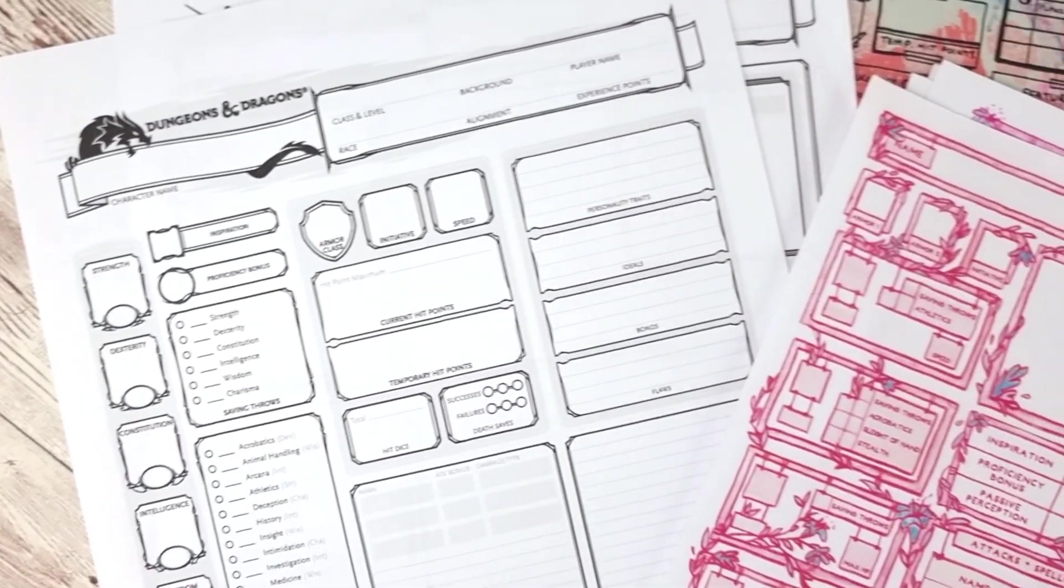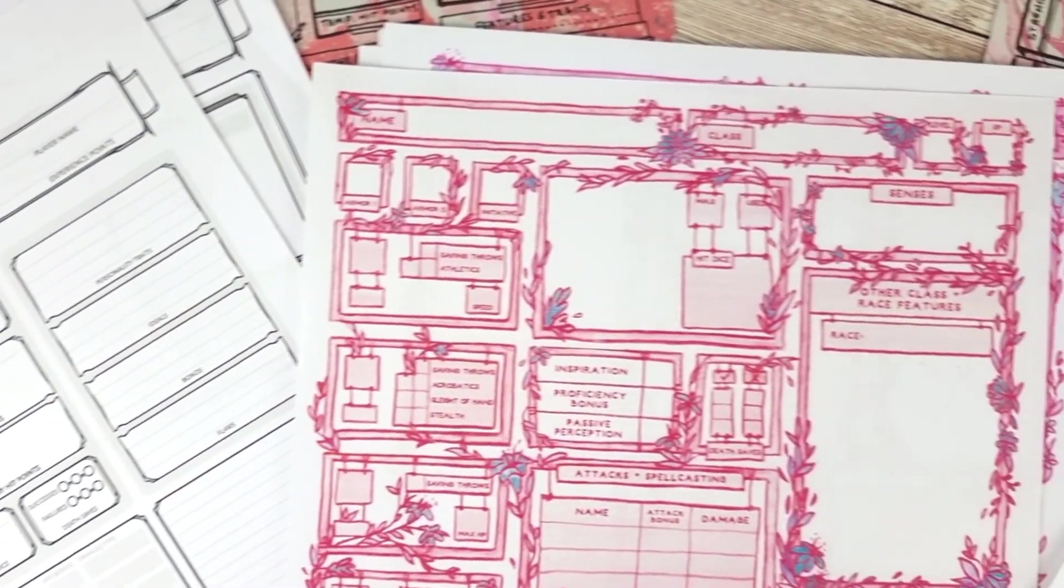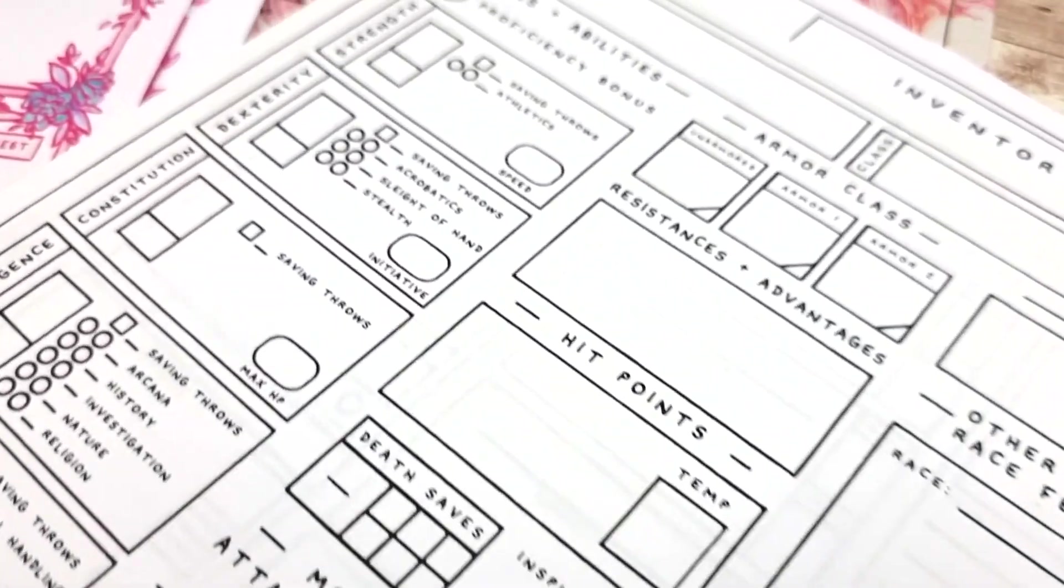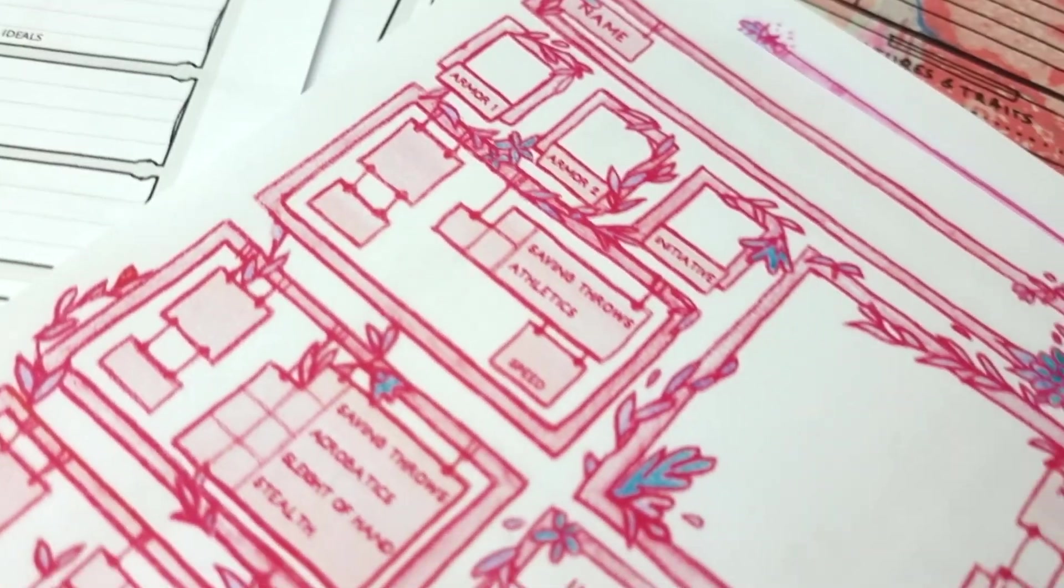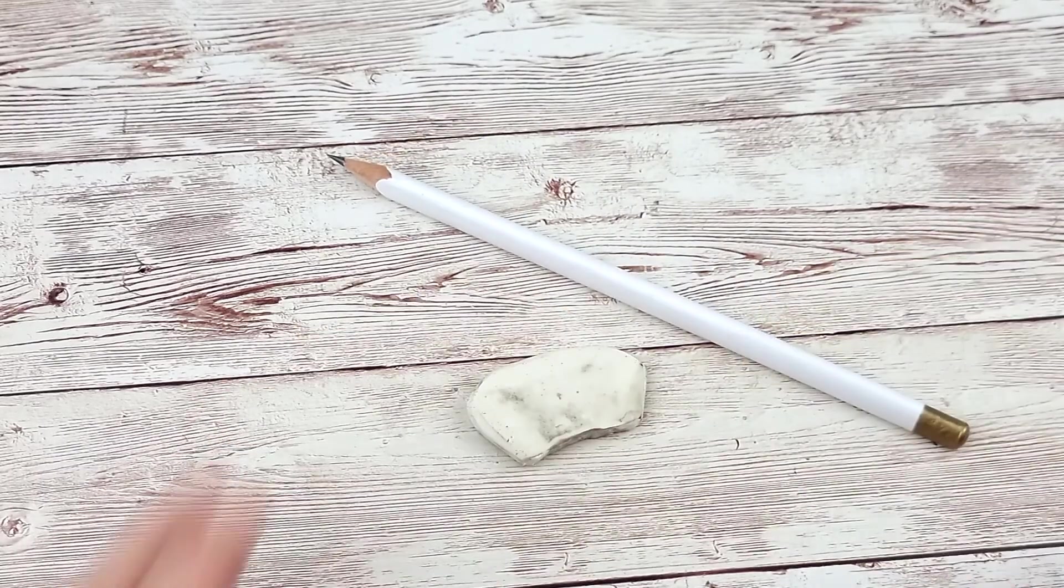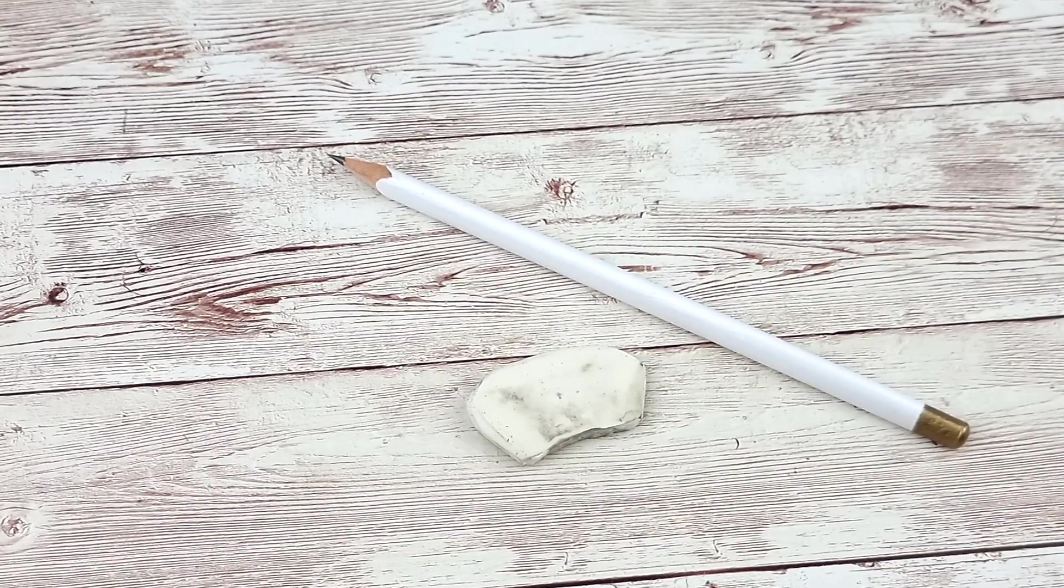You'll also need a character sheet, there's a default version included in the handbook but there are also many fun designs available from creators. These are some of my favorites that I've made and I'll have these and the ancestry and culture book linked below. Finally you'll need a pencil and an eraser. The information on your sheet will change plenty of times so it's best not to commit by using a pen.